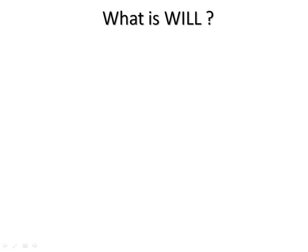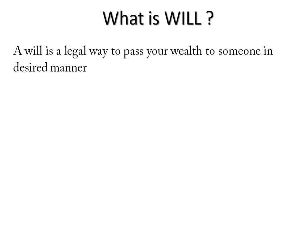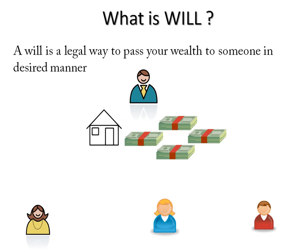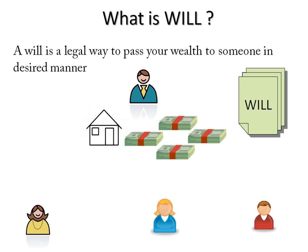Let's start with the question: what exactly is a will? If you see the legal definition, a will is a legal way to pass your wealth to someone in a desired manner. For example, let's say there is a guy whose family consists of a wife, one daughter, and one son, and he has some assets like a house and some money in a savings bank account.